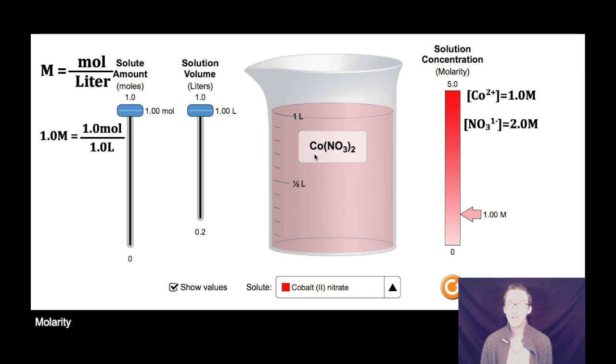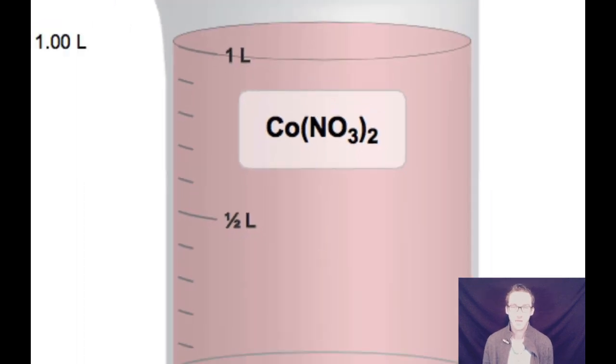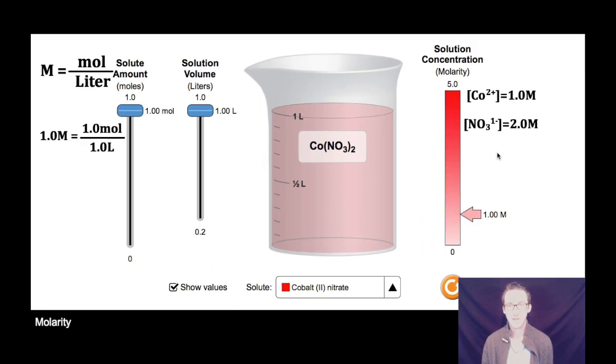Recognize, however, that the ratio of ions in this solution is not one cation to one anion. It is one cobalt cation to two nitrate anions. Think about what that means in terms of the concentration of each of those ions in solution.